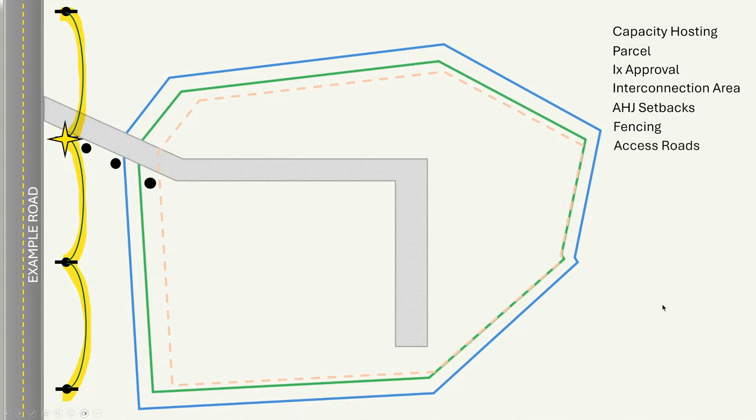Next up we'll need to design our access roads. Access roads are typically dictated by the utility, the local AHJ fire department, or owners. But they're a great idea on any utility scale project as they allow easy access to equipment.